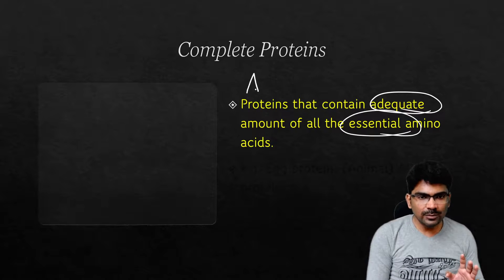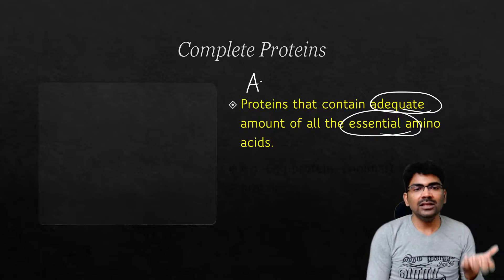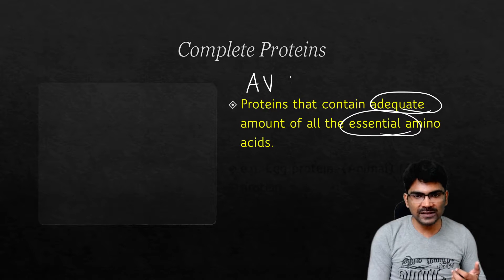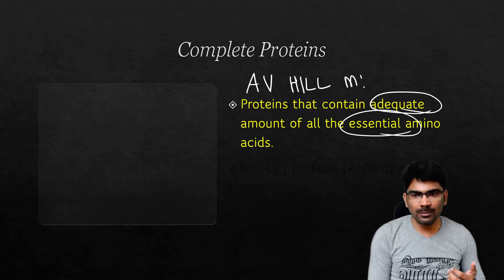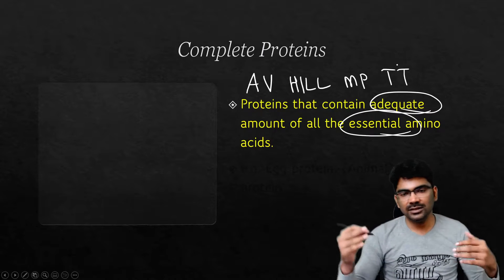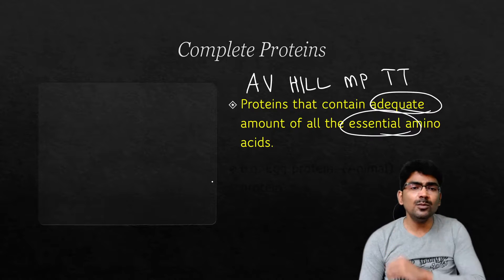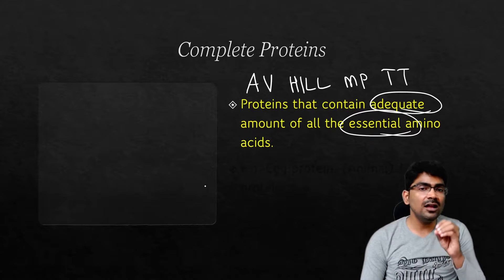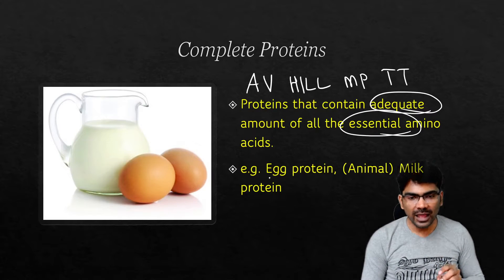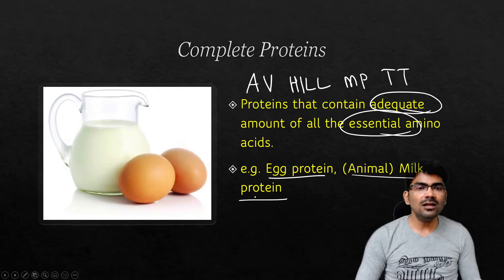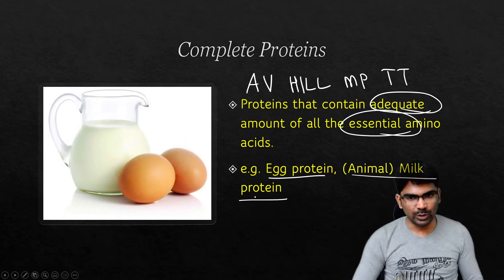The mnemonic for remembering the names of the 10 essential amino acids is A.V. Hill M.P.T.T. or P.V.T. Tim Hall. Most animal proteins are complete proteins — egg protein and animal milk protein are all complete proteins.